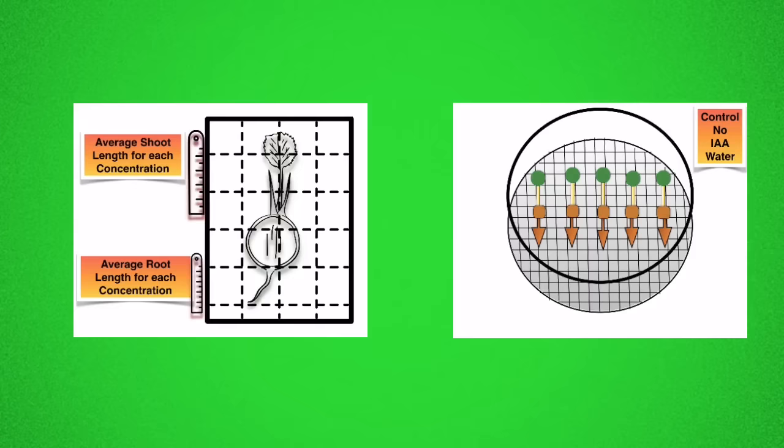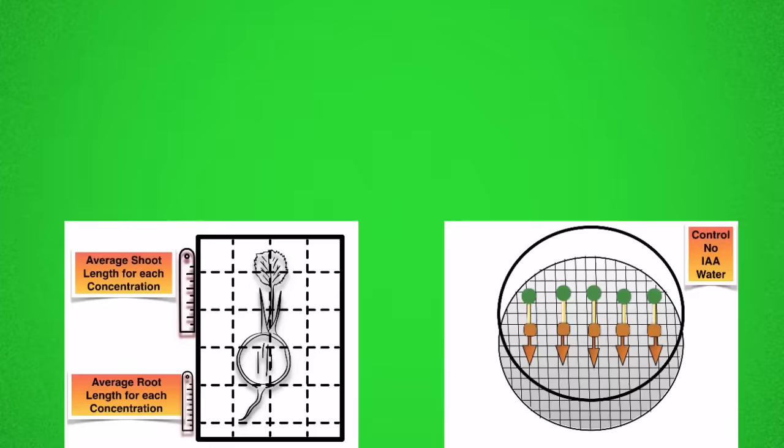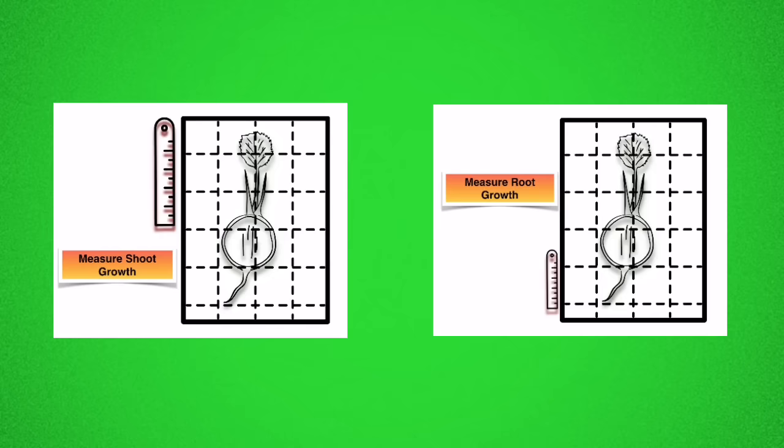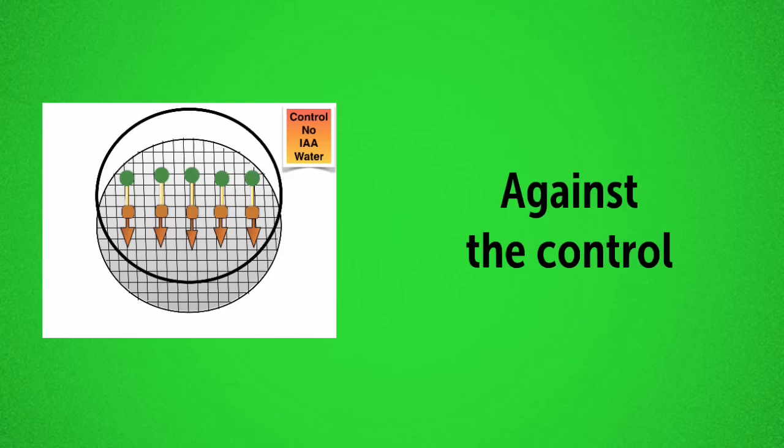After three days you measured the shoot growth and the root growth of each of the five seeds in each of the dishes and you got the average for the shoots and average for the roots. Each of the seven dishes with IAA are going to be compared to the control with no IAA. So taking each petri dish you measured the shoot growth for each of the five seeds and you got the average, and then you measured the root growth for each of the five seeds and you got the average. Then you calculated the percentage root and shoot stimulation. Don't forget that you're comparing percentage stimulation and percentage inhibition in the shoots and in the roots as compared against the control.